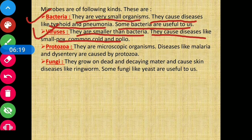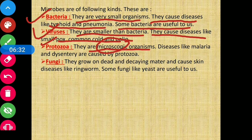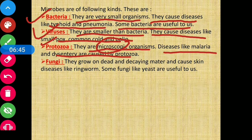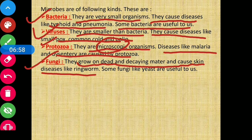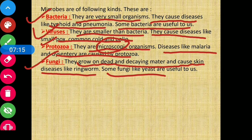Protozoa are microscopic organisms — jise microscope ki help se hi dikha ja sakta hai. Diseases like malaria and dysentery are caused by protozoa. Fungi grow on dead and decaying matter and can cause skin diseases like ringworms. Jo fungus hai, woh dead or decaying matter pe grow karti hai aur skin diseases karne mein capable hoti hai. But some fungi like yeast are useful to us — yeast is a kind of fungi that is very useful while baking a cake.